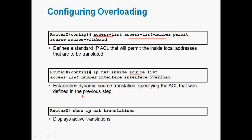We give the access list number — for example, 1 — then specify the interface using the 'interface serial [port number]' command, followed by the keyword 'overload'. The overload keyword indicates many-to-one mapping, meaning many private IP addresses can be translated into a single public IP address. The port number is also translated in this configuration, making it PAT.